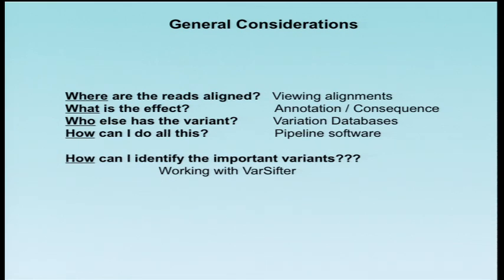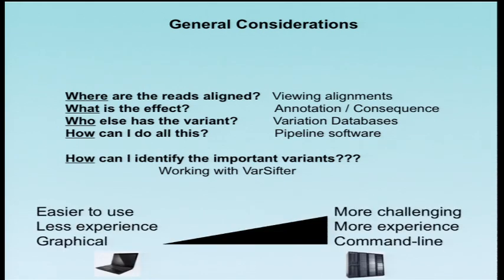All right, so I'll frame these general considerations as sort of the who, what, where questions. We'll start with where are the reads aligned, and I'll briefly talk about some of the programs to align, to view the alignments, and there is value to looking at the more raw data, and I'll tell you a little bit about that. What is the effect of our variants? We'll talk about annotation and consequence programs to determine the context, and then what perhaps predicted detriment your variant might have. Who else has the variant? So we'll talk about some variant databases, looking at populations and sequencing data across many different populations. And finally, how can this all be done? I'll talk a little bit about pipeline software to help pull all these tools together and generate as a pipeline a final set of data.